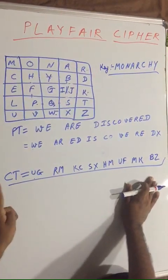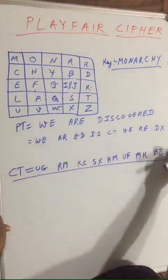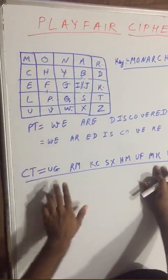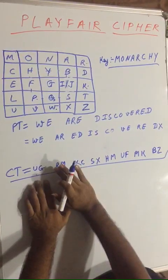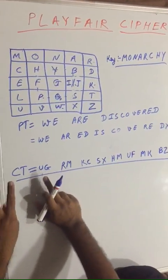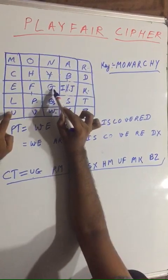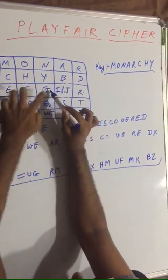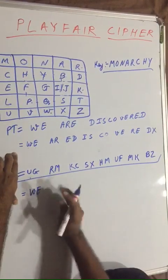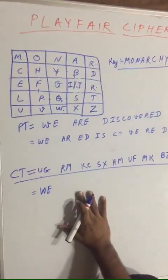If you are given a ciphertext and need to find the plaintext, you write the key back into the matrix and follow exactly the same rules in reverse. For example, for UG: U is here, G is here — they form a rectangle, so U gives W and G gives E, recovering WE — which was our original plaintext. There is no different method for encryption and decryption; we follow the same pattern. That was all about the Playfair cipher.